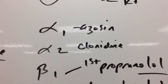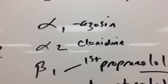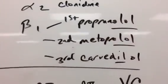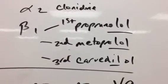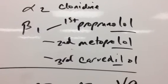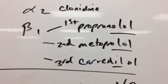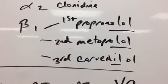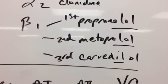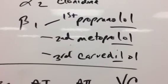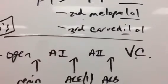Alpha-1 blocker, like doxazosin. Alpha-2 is clonidine. You want to know the difference between first, second, and third generation beta blockers. So beta-1, beta-2 would be propranolol, which is first generation. Second would be beta-1, which is metoprolol. It's specific. And then again, we have the nonspecific carvedilol, but it also has a vasodilatory effect, the DIL for vasodilator.